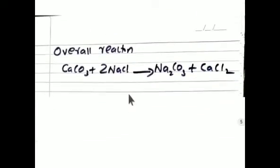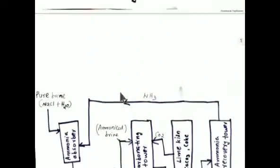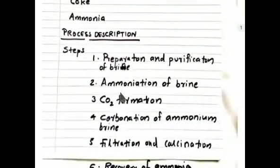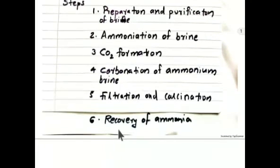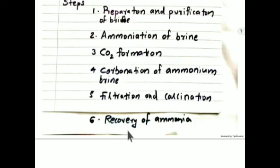The overall reaction of the Solvay process is: CaCO₃ + 2 NaCl → Na₂CO₃ + CaCl₂. To summarize the six steps: purification and preparation of brine; ammoniation of brine; carbon dioxide formation in the lime kiln; carbonation of ammonium brine in the carbonating tower; filtration and calcination to get sodium carbonate; and finally, recovery of the catalyst ammonia.